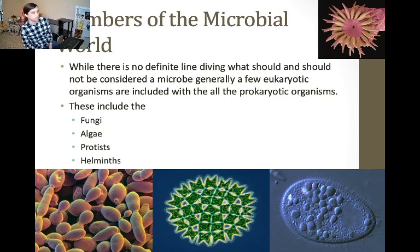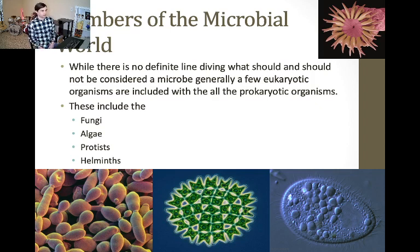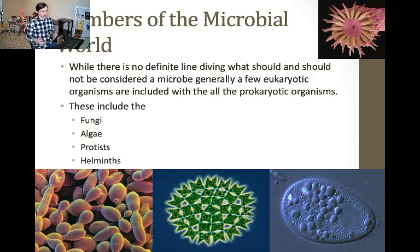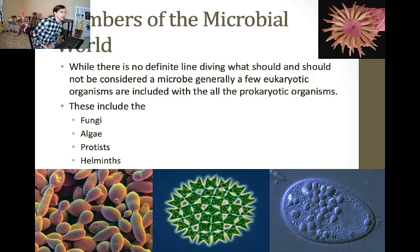So what do microbiologists actually study? There really is no definitive line for what counts as a microbe — it's generally things you can't see with your naked eye, though that gets blurry with organisms like worms whose adult forms are visible but whose larval and egg forms are not. Generally, microbiologists study every prokaryotic organism — bacteria and archaea — as well as a few eukaryotic microbes. We'll discuss the difference between prokaryotes and eukaryotes shortly.